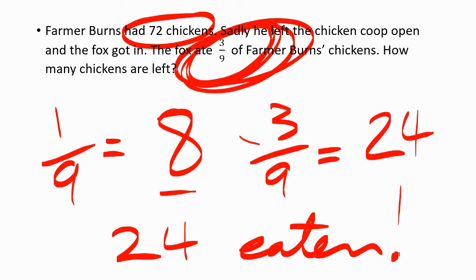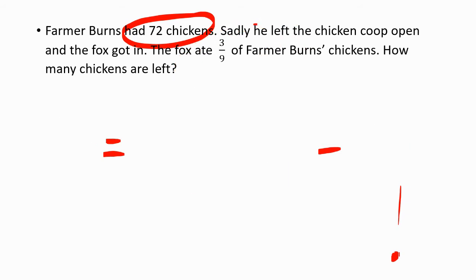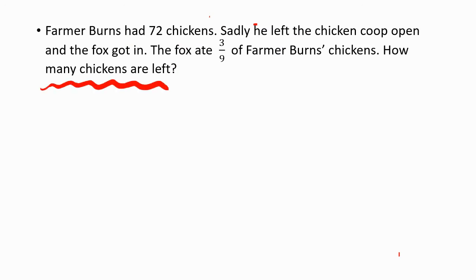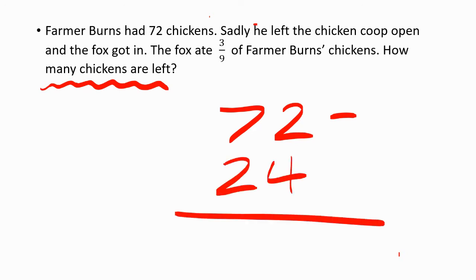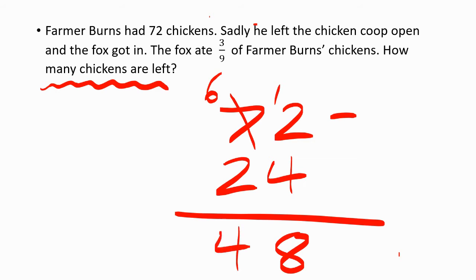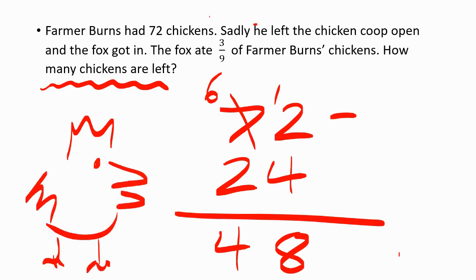24 chickens have been eaten, but that's not the final answer. The question is asking how many chickens are left. To find that, it's going to be 72 take away 24 — that's how many chickens were eaten. So 2 take away 4 you can't do, you've got to borrow. This becomes 12. 12 minus 4 is 8, and 6 minus 2 is 4. So 48 chickens are left.